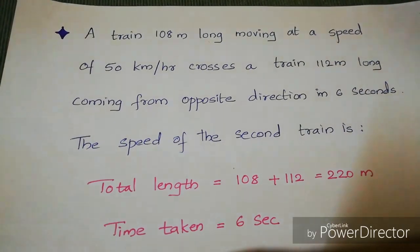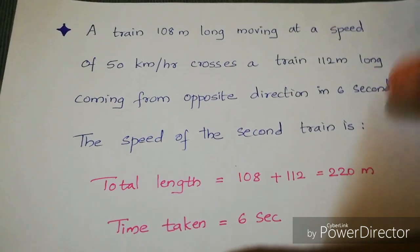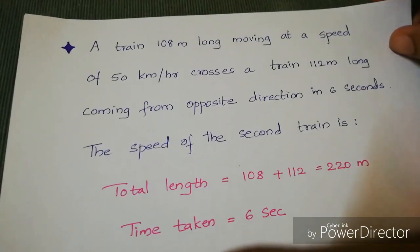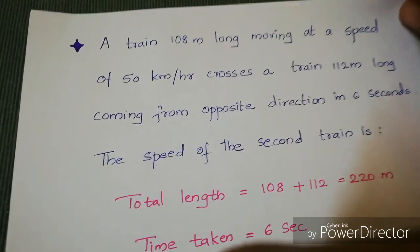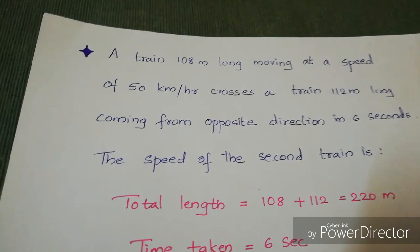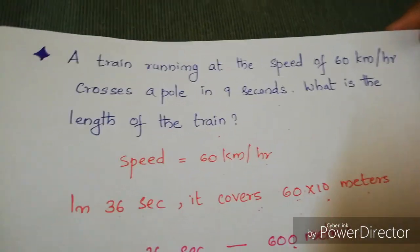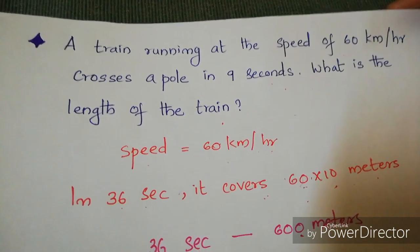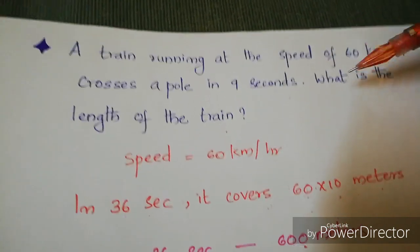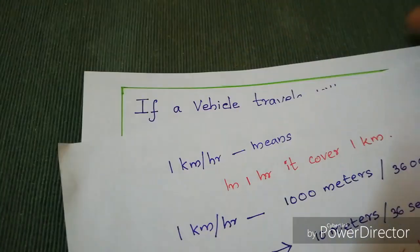Hi friends, welcome to my YouTube channel. Today's section is train problems. Here I am using a very shortcut method to solve train problems — we can solve the problem within a minute. Let's start with a simple question: a train running at the speed of 60 km per hour crosses a pole in 9 seconds. What is the length of the train?